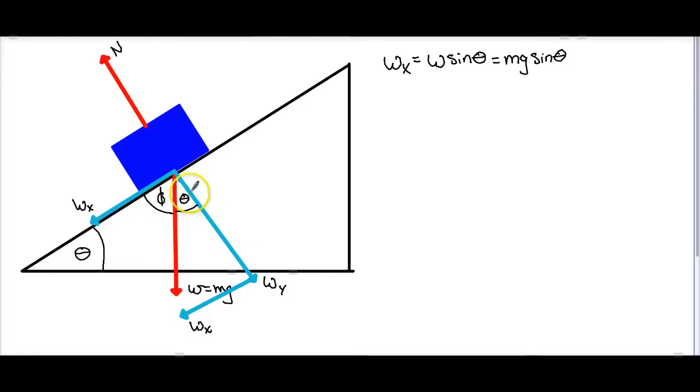If we then look at the y component, that's the adjacent side to our theta. So we follow the same logic, where it's w, and because it's adjacent, and we know the hypotenuse, it's in cosine theta, or more simply mg cosine theta.